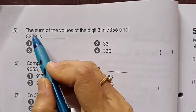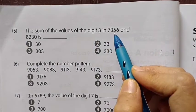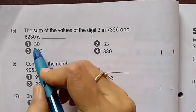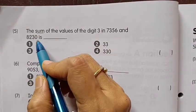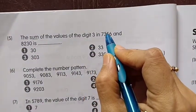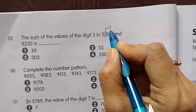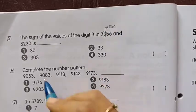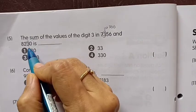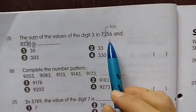Number 5: The sum of the values of the digit 3 in 7356 and 8230 is... 3 here is in the hundreds place, so the value is 300. And the second 3 here is in the tens place, so the value is 30.